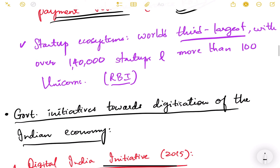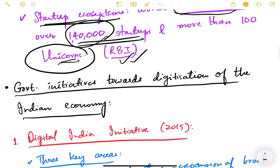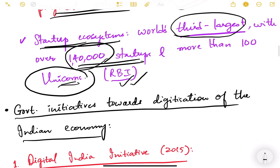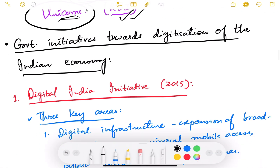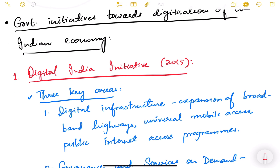India is the third largest startup ecosystem in the world, with over 1,40,000 startups and more than 100 unicorns, as per RBI data. A unicorn is a startup that has become very successful and grown into a big company. Having 1,40,000 startups using digital technologies makes us the third largest digital startup ecosystem in the world.